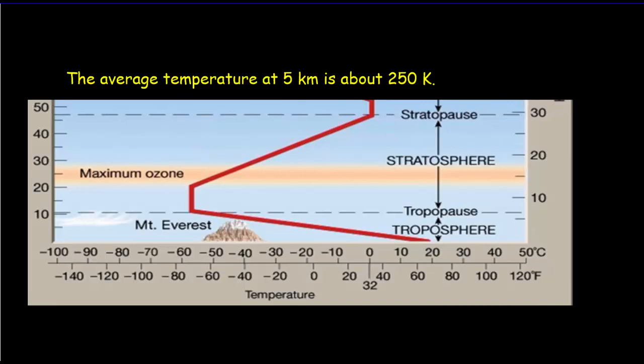The temperature in the Stefan-Boltzmann law is really a surface temperature, so that prediction of negative 16 degrees Celsius is a surface temperature. But we didn't really distinguish between the Earth and the atmosphere — we were looking at the Earth-atmosphere system. There's no sharp top to the atmosphere; it just kind of peters out.